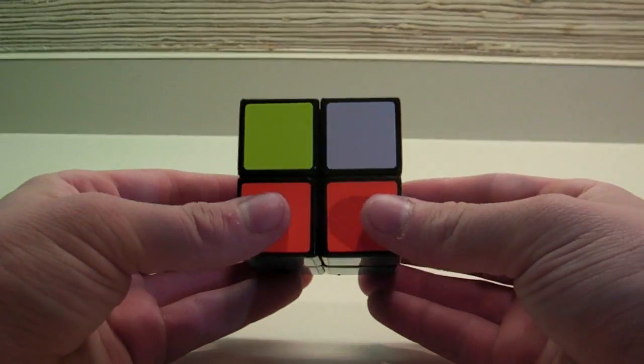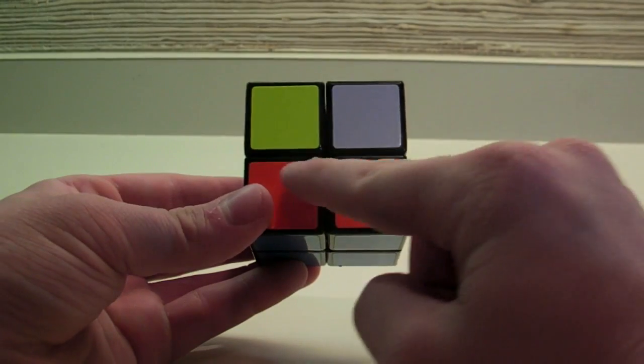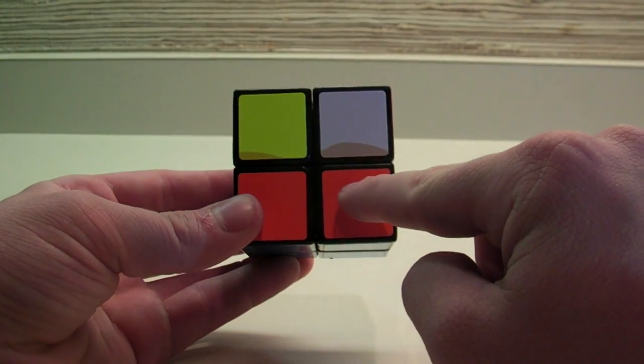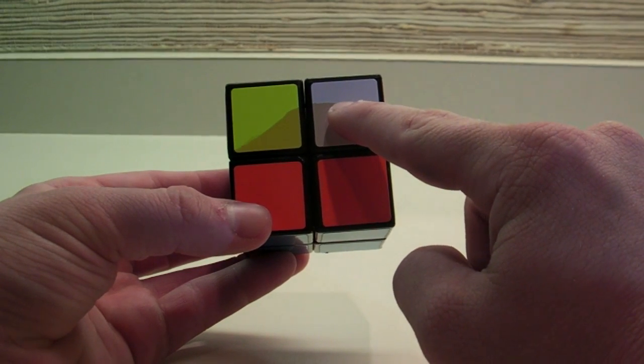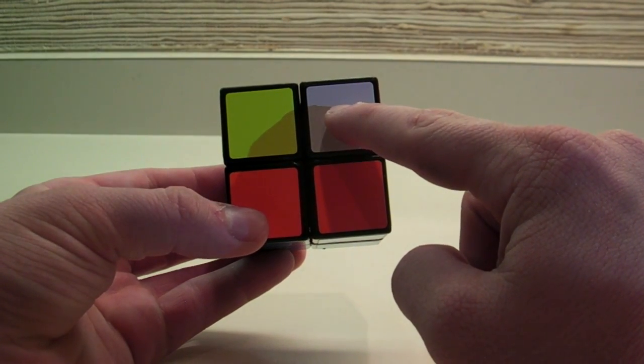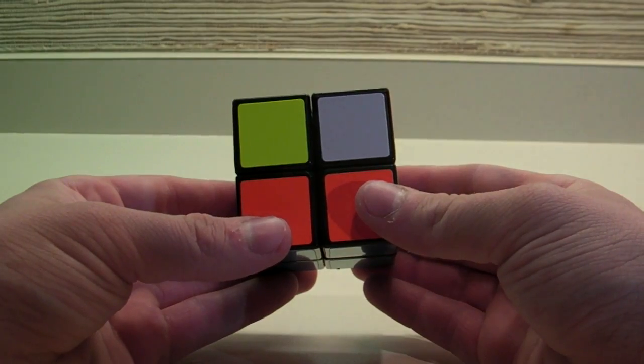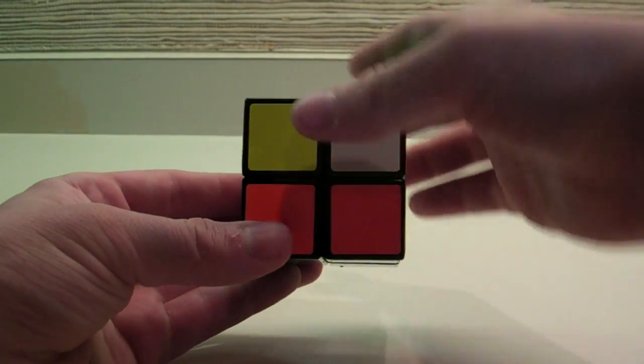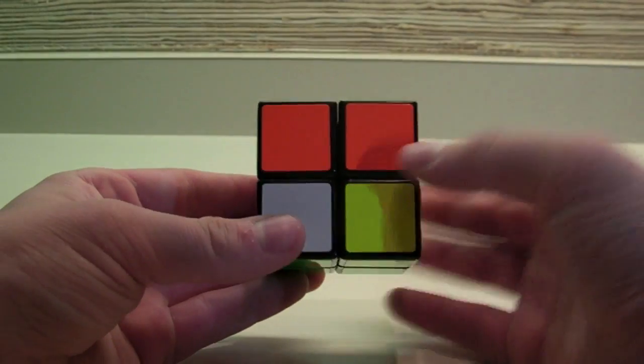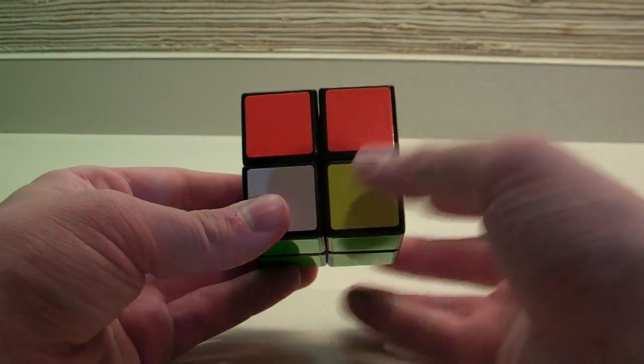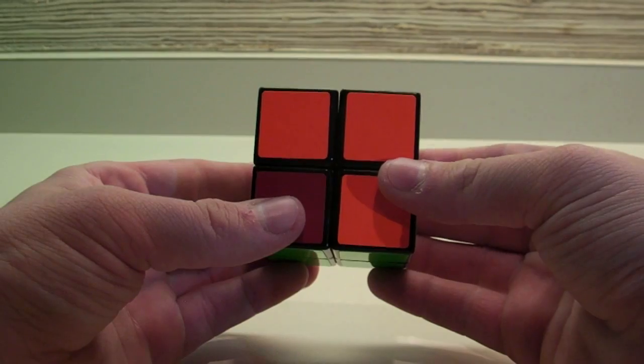And then, for the third step, I'm going to analyze the case I have. I have two matching pieces here. So, I have an adjacent switch on the bottom, and I have opposite colors here, which means I will need an opposite switch on the top. Which means that I can use the third case that I showed you, as long as I do a cube rotation. So, match them on the front, then match them on the side here, and then do the algorithm.